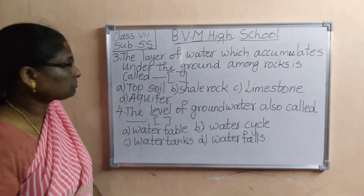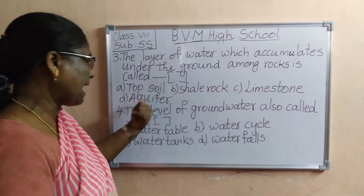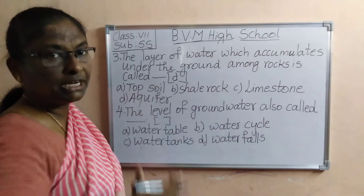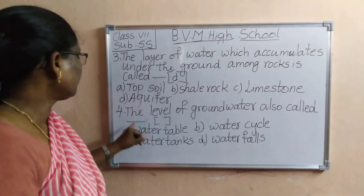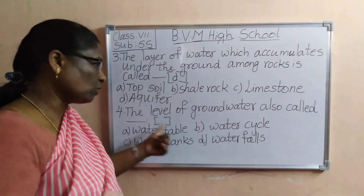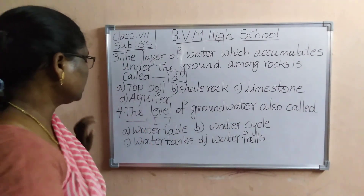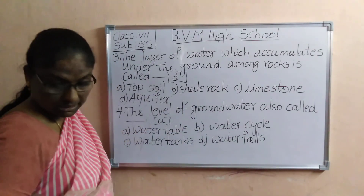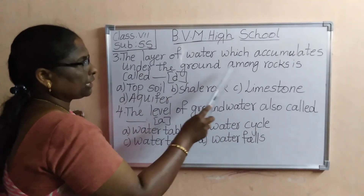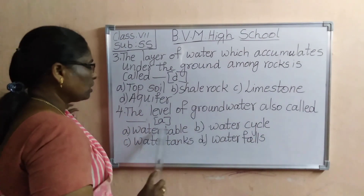Third one: the layer of water which accumulates under the ground among the rocks is called aquifer. Aquifer determines the availability of groundwater also. Fourth one: the level of groundwater is also called dash — is it water table, water cycle, water tanks or waterfalls? That is water table. The layer of water which accumulates under the ground among rocks is called aquifer. The level of groundwater is also called water table.